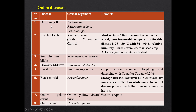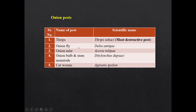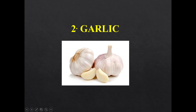Onion diseases: Purple blotch is caused by Alternaria porri — it is the most serious foliar disease of onion in the world. The most favorable condition for purple blotch disease is 28-30 degree Celsius with 80-90% relative humidity. Stemphylium blight is caused by Stemphylium vesicarium. Downy mildew is caused by Peronospora destructor. Basal rot is caused by Fusarium oxysporum. Black mold is caused by Aspergillus niger — it is a storage disease and colored cultivars are more susceptible compared to white ones. Onion yellow dwarf is a viral disease with aphid as its vector. Pests of onion include thrips, onion fly, onion mite, onion bulb and stem nematode (Ditylenchus dipsaci), and cutworm. Thrips is the most destructive pest of onion.